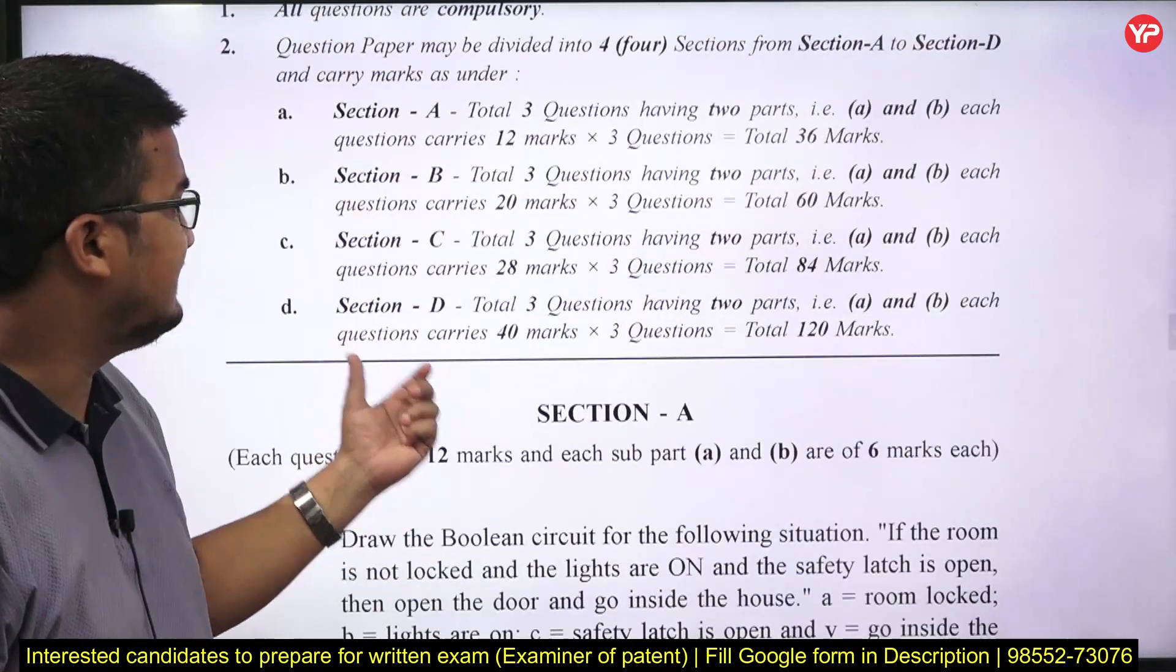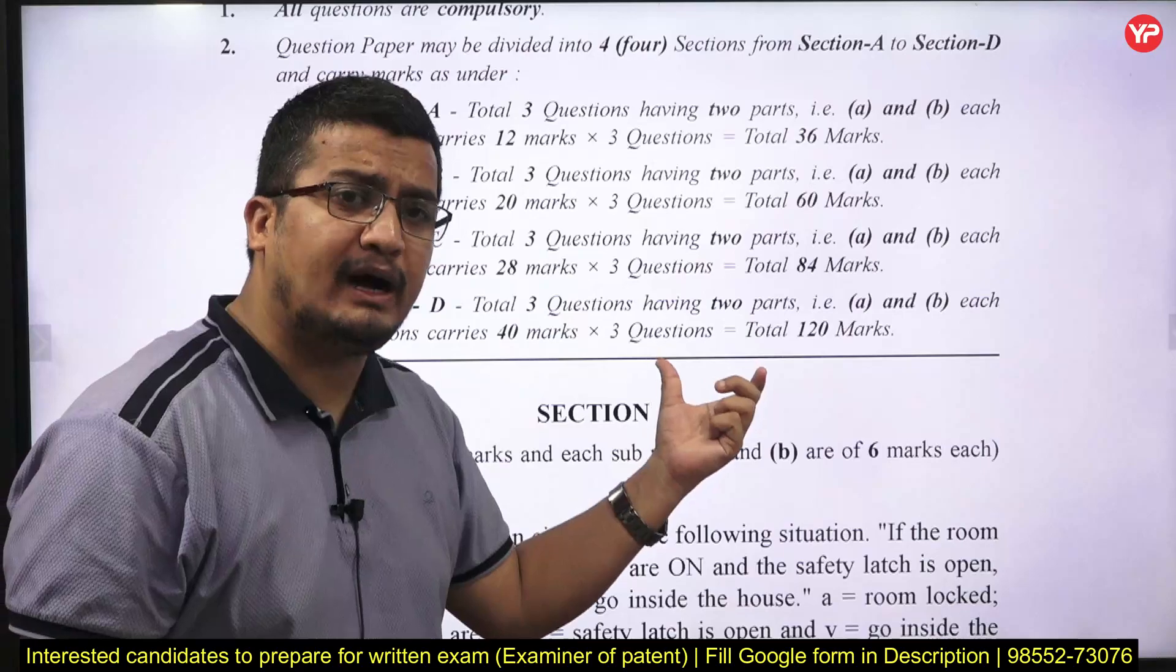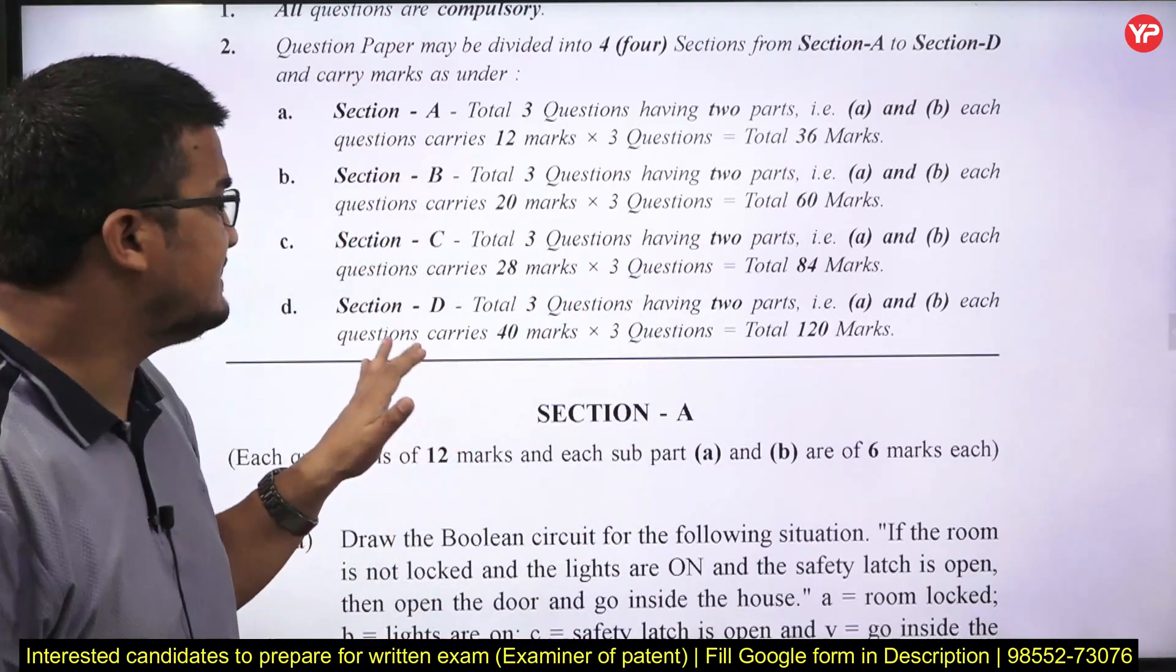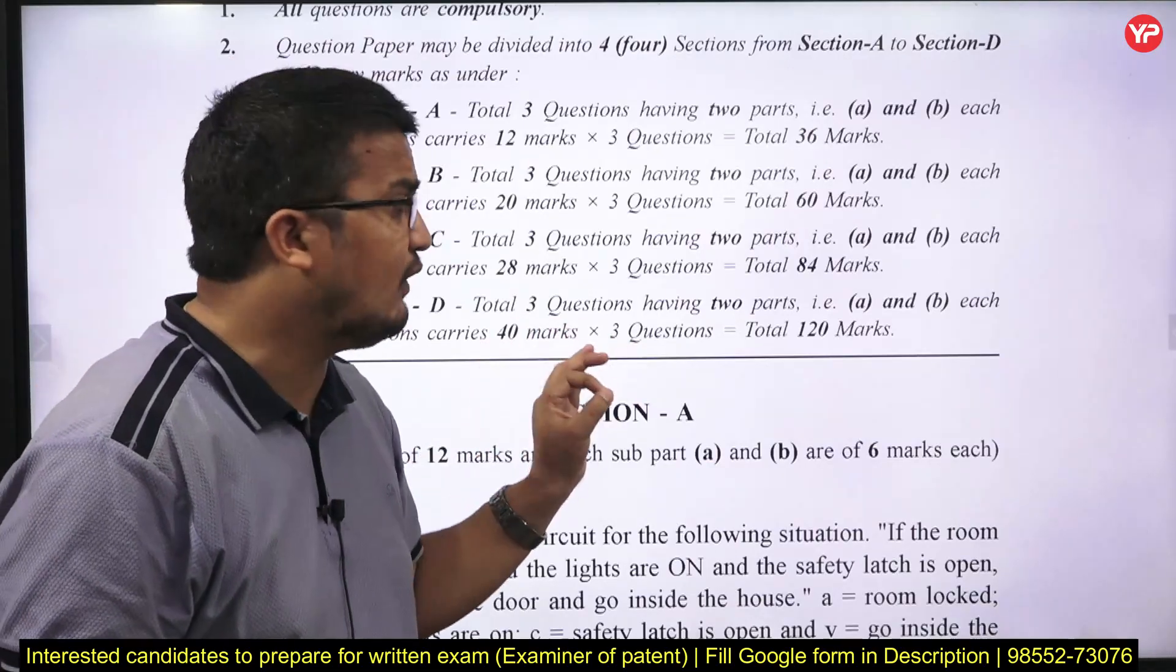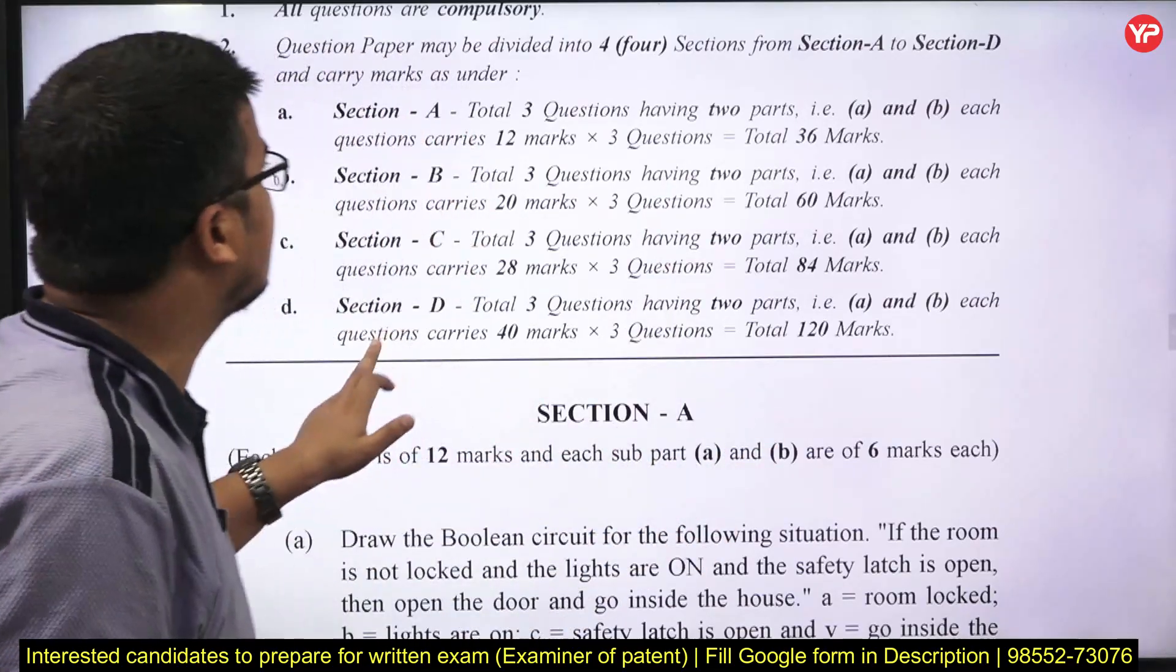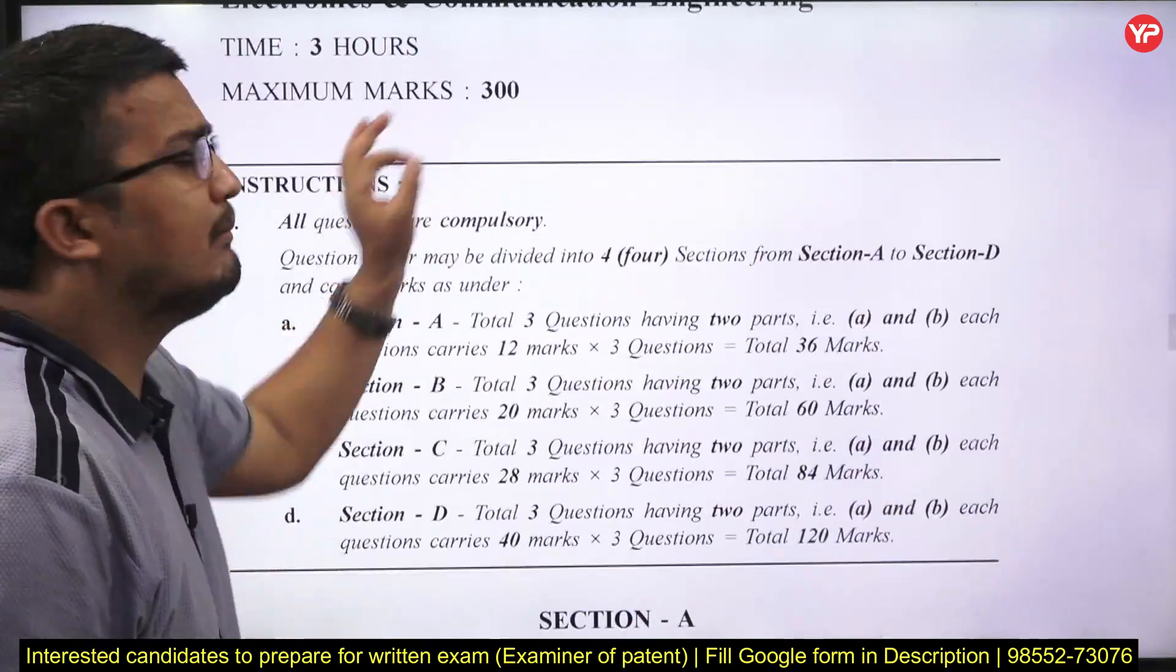And there is last section, section D, total 3 questions having 2 parts as identical as like A, B, C and each question is carrying 40 marks. So 3 into 40, 120. If you sum up 120, 84, 60, 36, it turns around to be 300 marks.